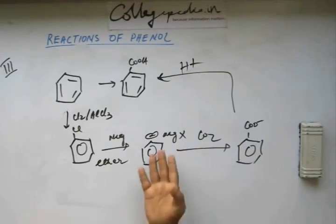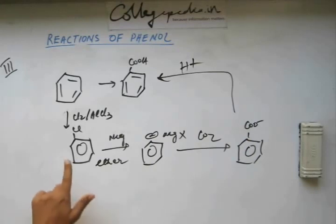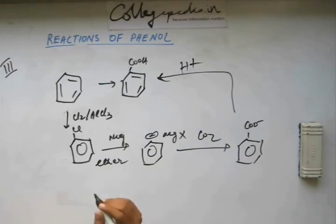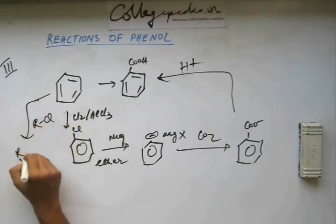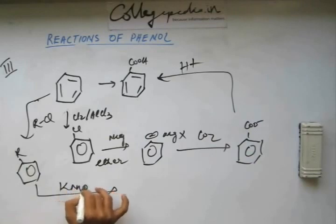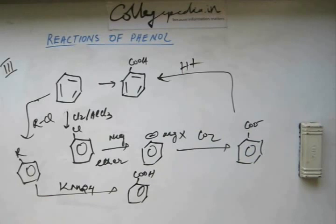There could be other methods using Sandmeyer reaction which comes in the chapter of amine. So perhaps you are studying phenol, you haven't studied amine, so let's not go into it. But this is something we have studied before when we studied Grignard reagent. Fine? Alright. There are other methods. What you can do is, you go for alkylation. Prepare an alkylbenzene. And alkylbenzene on oxidation with KMnO4 will give you directly benzoic acid. Fine? And you can think of other reactions as well. Thank you.